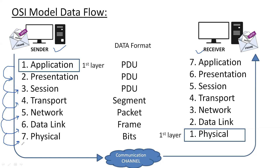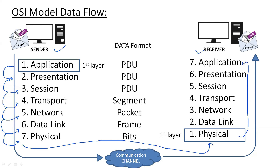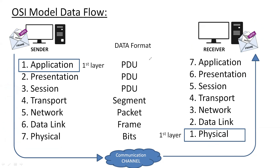From the Physical layer of the sender, the data is forwarded to the Physical layer of the receiver, and the reverse process of the sender is done on the receiver side. That is how the receiver receives the data.